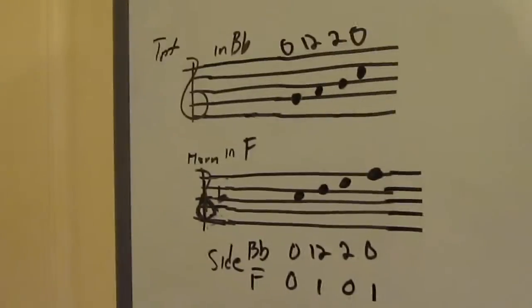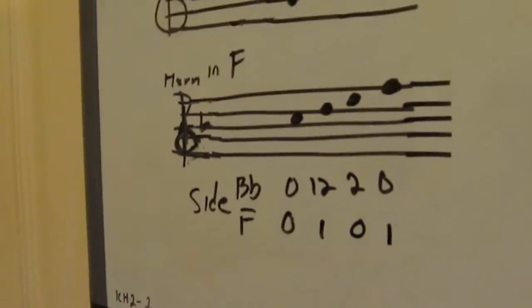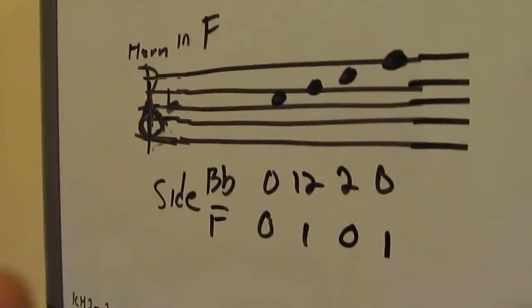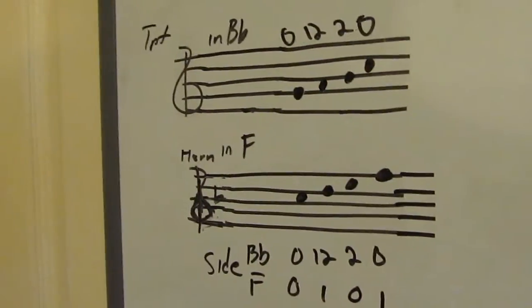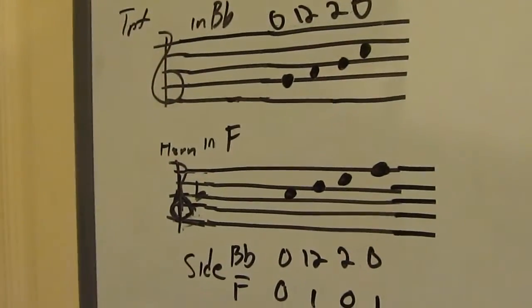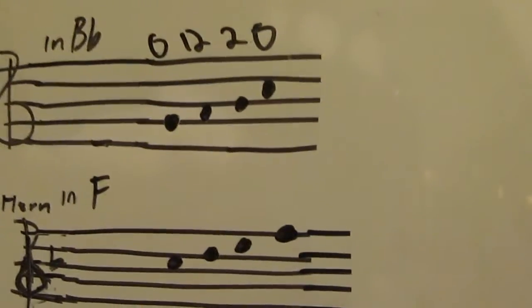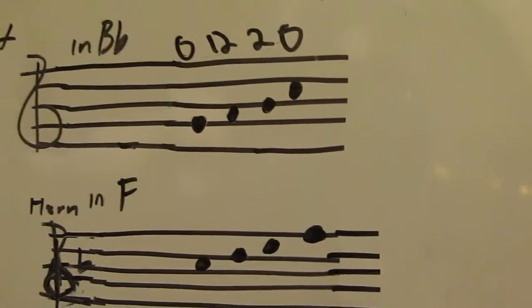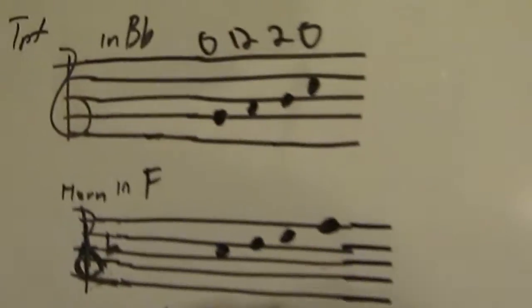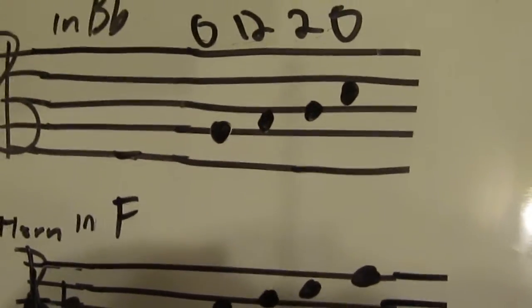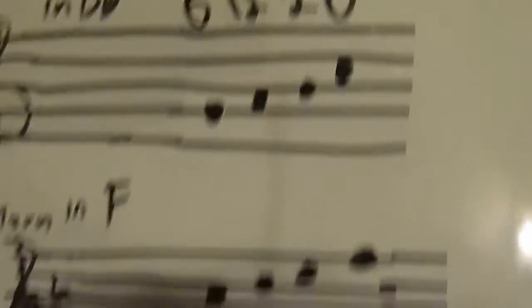Now, this is my personal way to learn how to read in F while using the Bb trigger or the Bb side. And I hope I don't confuse you guys. Now, as you can see here, there are four different notes in each staff, but they're the same pitch. Now, you may have noticed that the fingerings on each staff are the same. Zero, one, two, two, open.